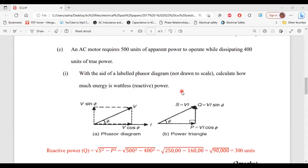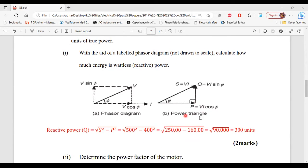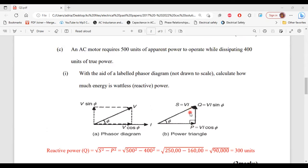All right, let's move on to part C. So it says an AC motor requires 500 units of apparent power to operate while dissipating 400 units of true power. Part one of C says with the aid of a labeled phasor diagram, not drawn to scale, calculate how much energy is wattless reactive power. So again, here's our diagram and here is the power triangle. Now, this is where the power triangle is very important because we'll have to use it to calculate the wattless power, which is the reactive power.